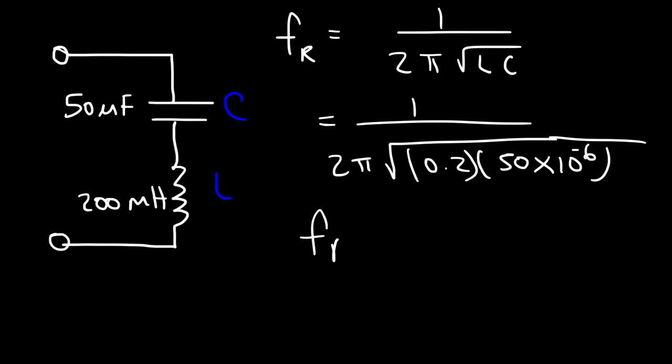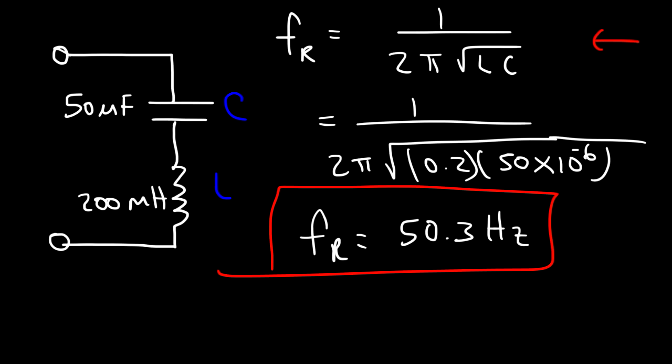And so the resonant frequency in this example is 50.3 Hertz. Now you know how to derive the formula for the resonant frequency of an LC circuit and how to calculate the resonant frequency. That's it for this video.